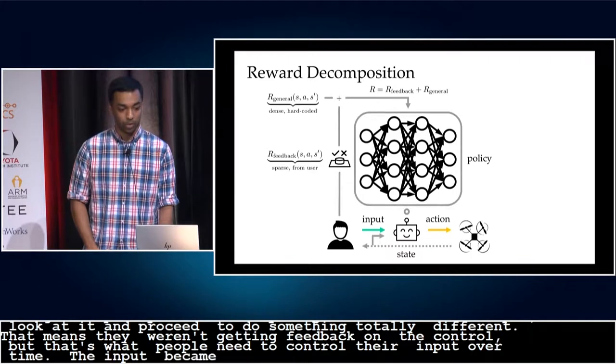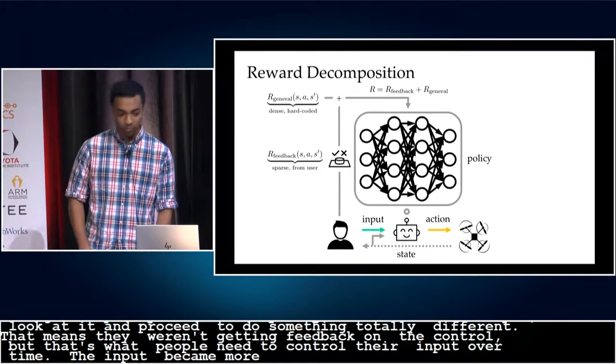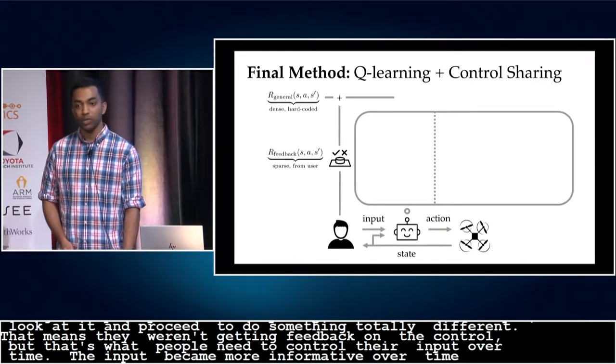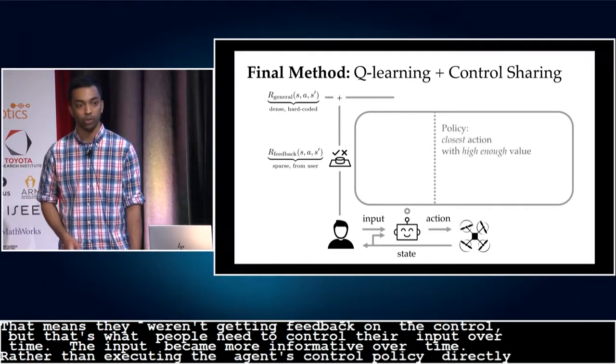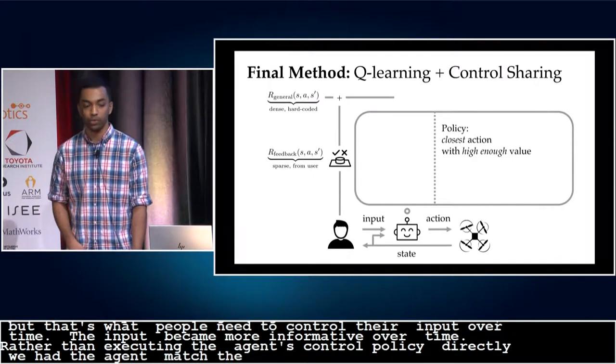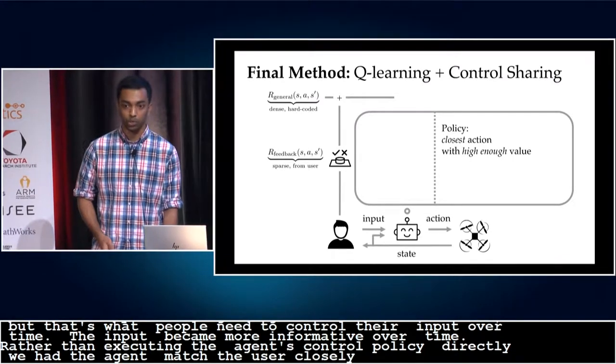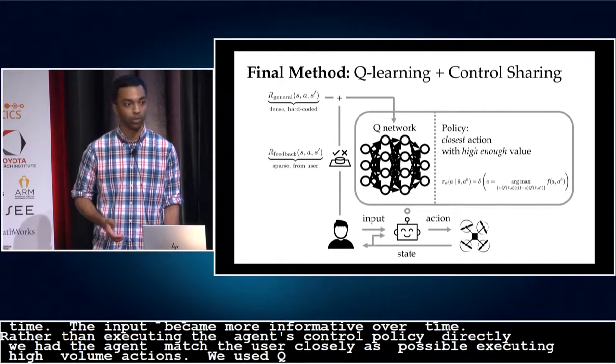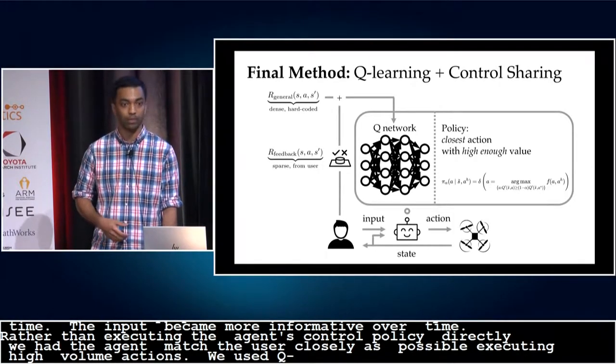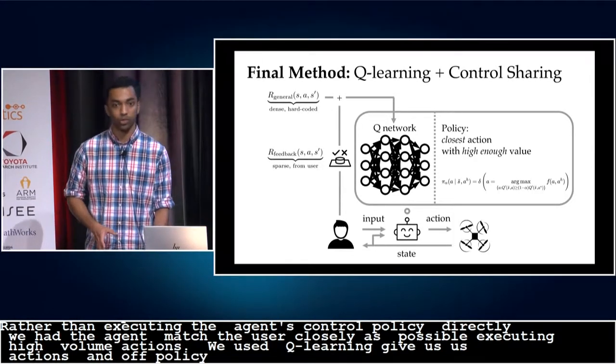So what we did was rather than executing the agent's control policy directly, we had the agent try to match the user as closely as possible while still executing high-value actions. To do this, we used Q-learning, which gives us values of actions and is an off-policy algorithm, which means the agent can learn even when we deviate from its policy to give the human some comfort.